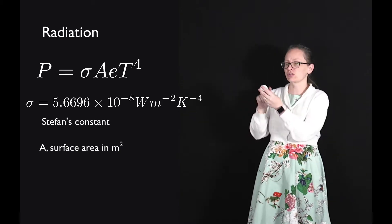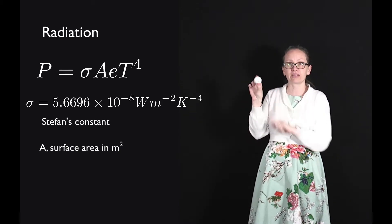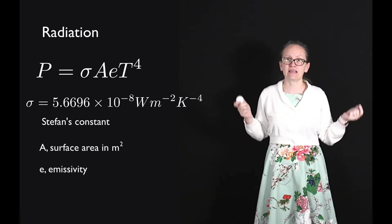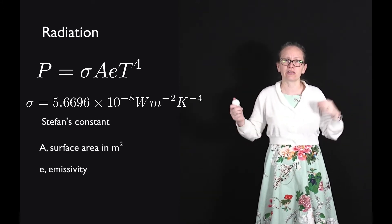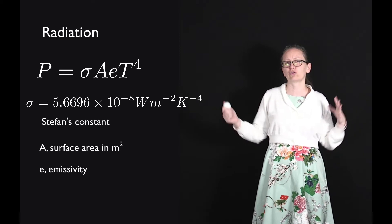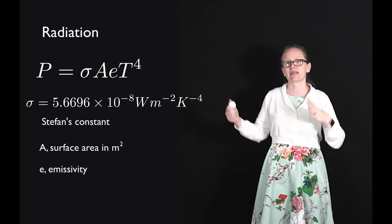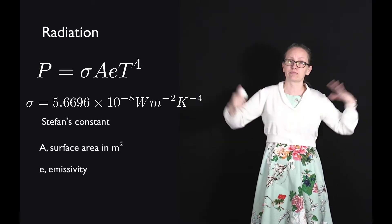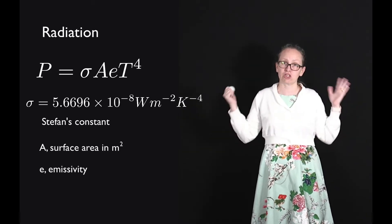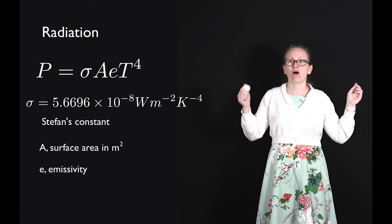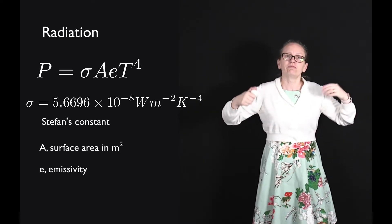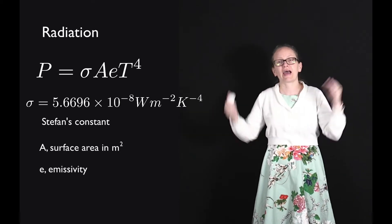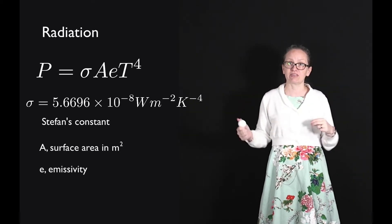A is the surface area of the body which is transferring the heat. E is the emissivity, which tells us how good a body is at absorbing the radiation that falls on it. A black body absorbs all of the energy which falls upon it and has an emissivity of 1. A mirror, which reflects the heat away, has a much lower emissivity.